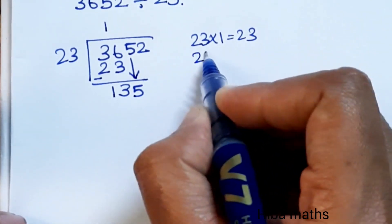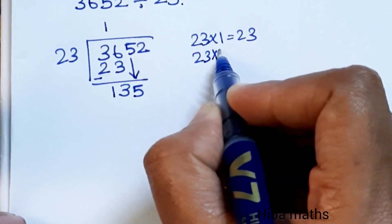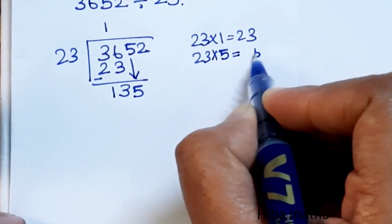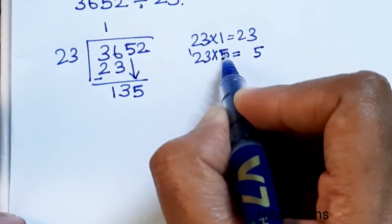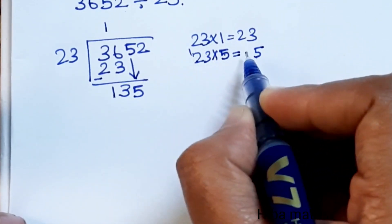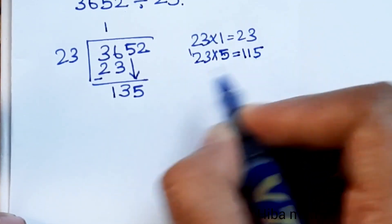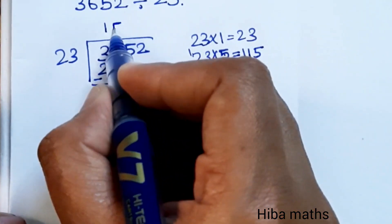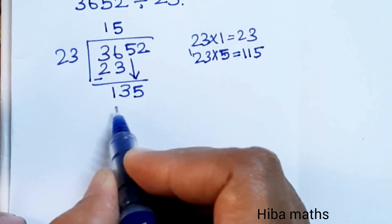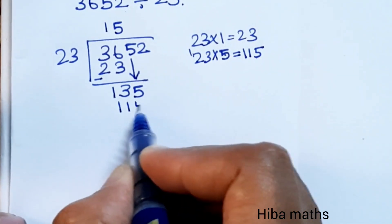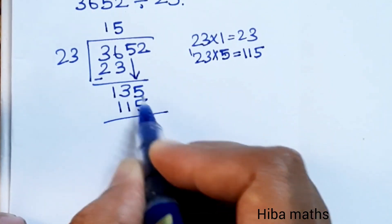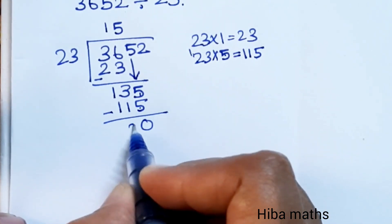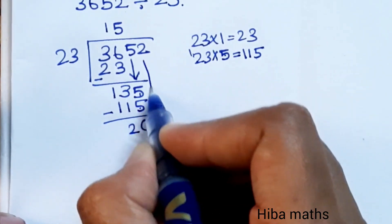23 into 135: 5 times 23. 5 times 3 is 15, carry 1. 5 times 2 is 10, plus 1 is 11. So 5 times 23 is 115. 135 minus 115 is 20. Bring down 2 to get 202.